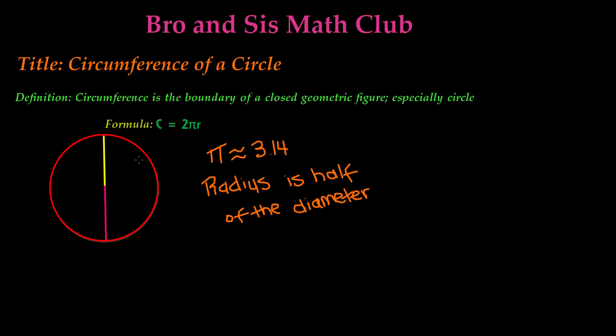So let's say that the diameter of this circle is 10 centimeters. So the radius will have to be 5 centimeters.